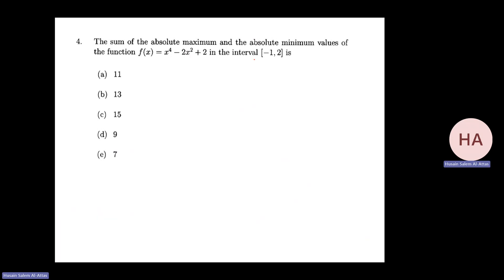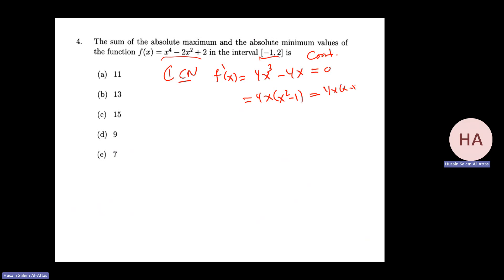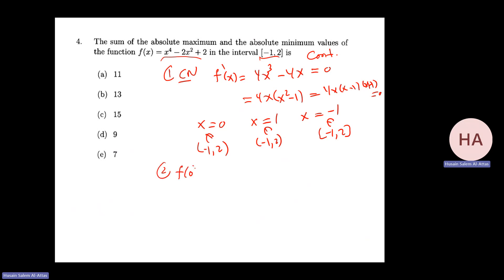The sum of the absolute maximum and absolute minimum is 2 plus (minus 2) equals 0. Now for another function: f prime equals 4x cubed minus 4x equals 4x(x squared minus 1) equals 4x(x minus 1)(x plus 1), set equal to zero. Critical numbers are x equals 0, x equals 1, and x equals minus 1, all within the interval.